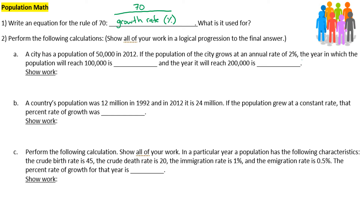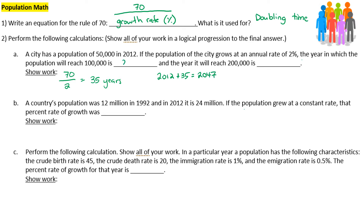The rule of 70 is used for determining the amount of years it takes for a population to double in size — this is called doubling time. Number two: a city has a population of 50,000 in 2012. If the population grows at an annual rate of 2%, we take 70 divided by 2 and get 35 years for a population to double. Add 35 to 2012 and we get 2047.